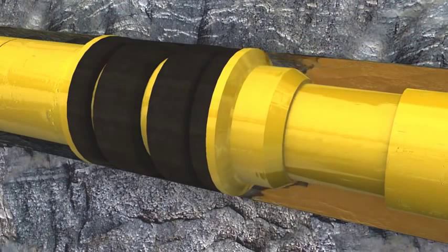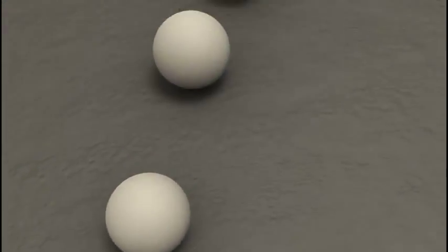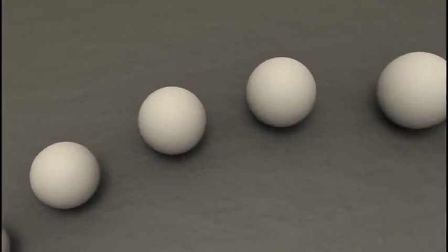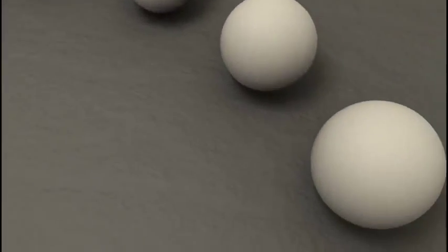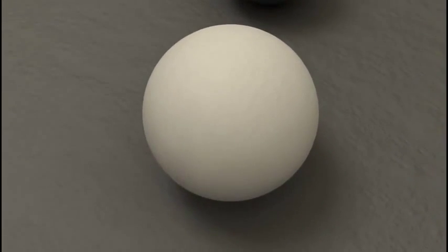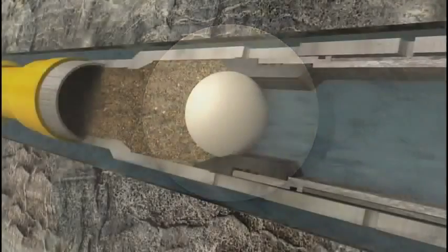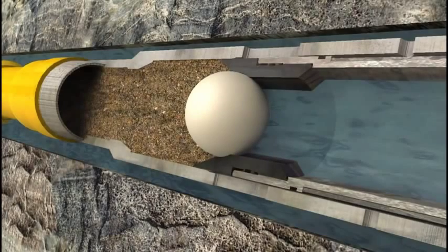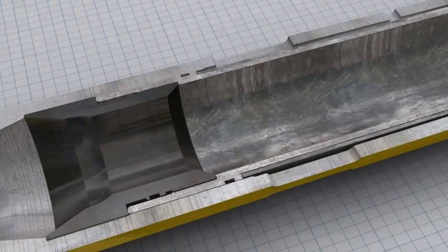Once the first zone is fractured, the second ball is deployed. The balls are sized and designed to seat only in their corresponding frack sleeves. The ball and seat serve two main functions. First, it isolates the lower zone from the frack fluid and pressure. And second, it shifts the frack sleeve into the open position.